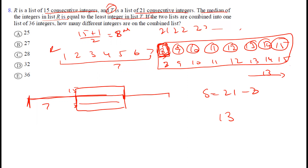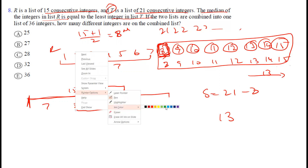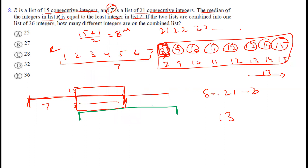The total unique numbers across both lists: 7 (unique to R) + 8 (overlap) + 13 (unique to T) = 28. The correct option is C.